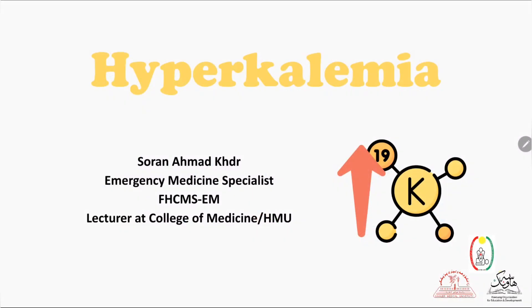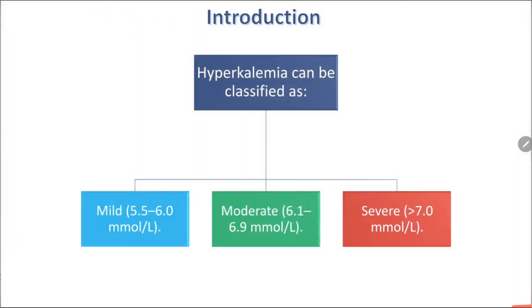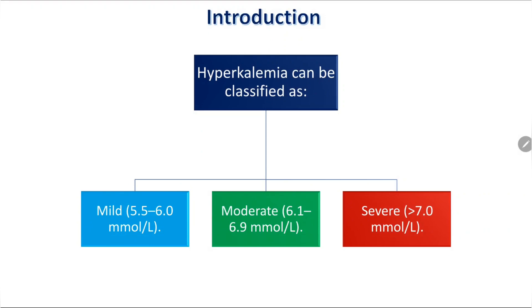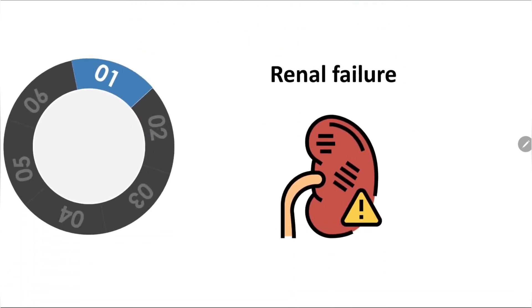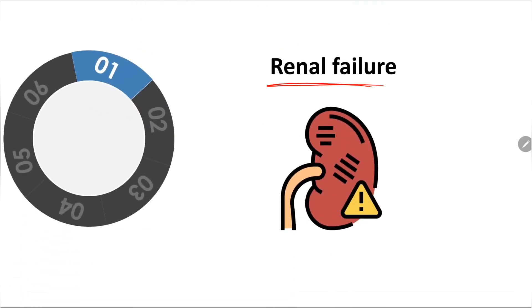Welcome everyone. I am talking about hyperkalemia. Hyperkalemia can be classified according to severity by the lab result: mild 5.5 to 6, moderate 6.1 to 6.9, and severe greater than 7 millimoles per liter. The main cause of hyperkalemia is...